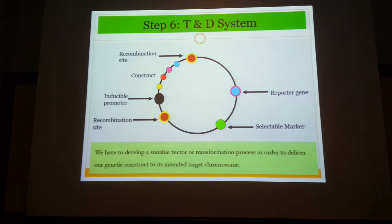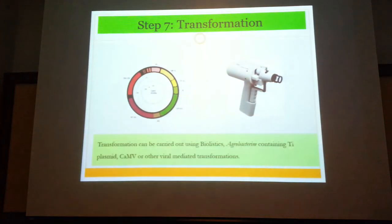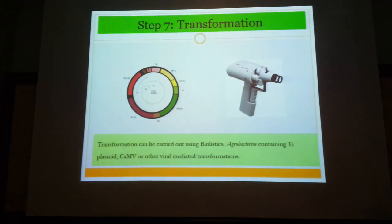When you want to express your gene, you grow your plant to a certain stage, then induce it using ethylene gas to achieve higher production of the pharmaceutical compound. Your construct will also include a reporter gene and a selectable marker. Once all this is in place, you transform it into plants using biolistic methods or Agrobacterium-mediated transfection.